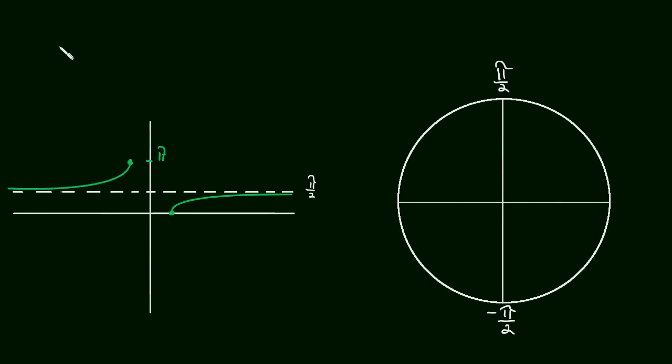I meant to write, this is a graph of the arc secant function. So arc secant of x equals y. And again, y has some restricted values, right? The range of this function is restricted. y is going to be between 0 is less than or equal to y, which is less than pi over 2.